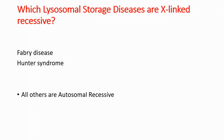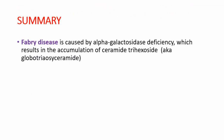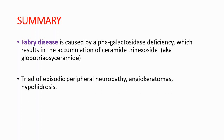As a summary: Fabry disease is caused by alpha-galactosidase A deficiency, which results in the accumulation of ceramide trihexoside. The early triad you will see is episodic peripheral neuropathy due to nerve damage, angiokeratomas, and hypohydrosis — a decreased secretion of sweat. These are the early signs, the early triad.